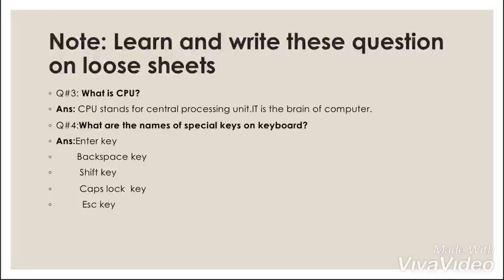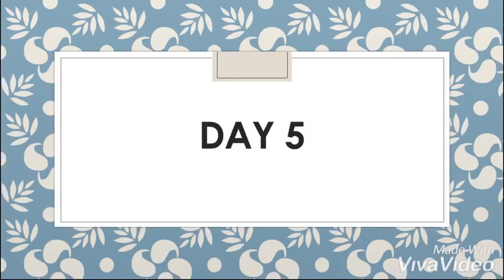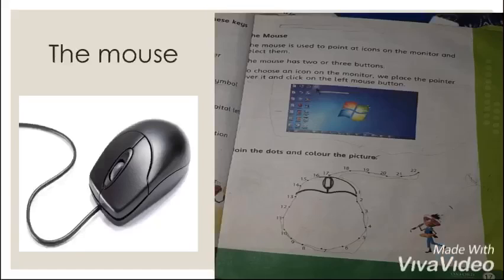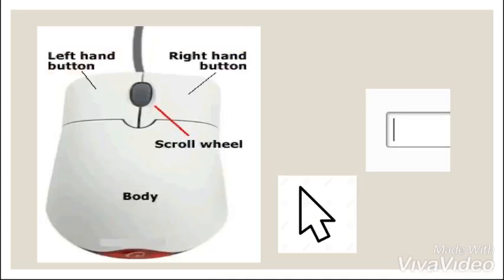Day five, the mouse. Mouse is used to point at icons on the monitor and select them. Mouse has two or three buttons. If we choose any icon, we place the pointer over it and click left mouse button. Now draw the dots and color the picture.